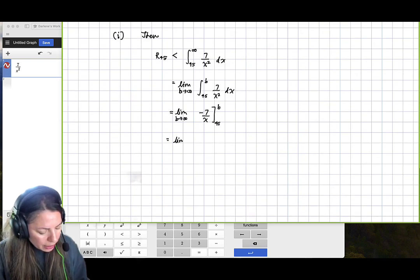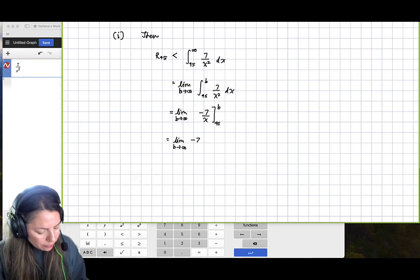So then we get the limit as b approaches infinity of negative 7 over b minus negative 7 over 45.